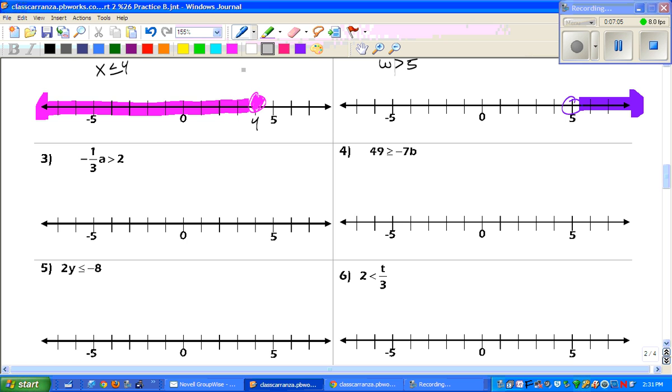Now, here, let's draw the line. To get rid of a fraction, you need to multiply by the reciprocal. Now, you're multiplying by a negative, so the first thing is we need to flip that sign. We get a, and then 2 times negative 3 is negative 6. So, for this one, we flipped. Now, is it open or closed? It is open at negative 6, and we shade to the right.